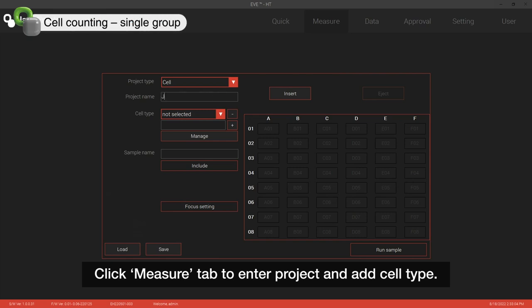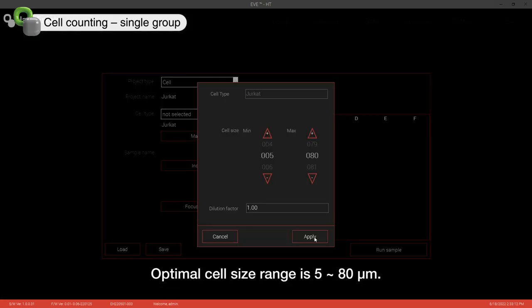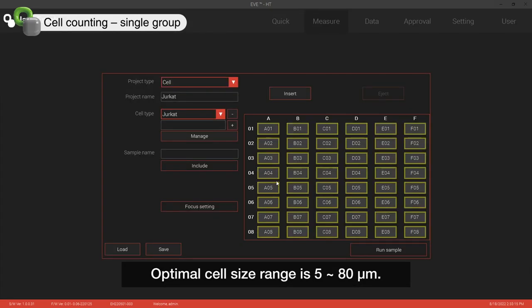Click Measure tab to enter project name and cell type. Optimal cell size range for EVE-HT is 5 to 80 micrometer.